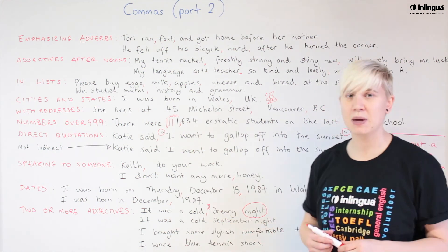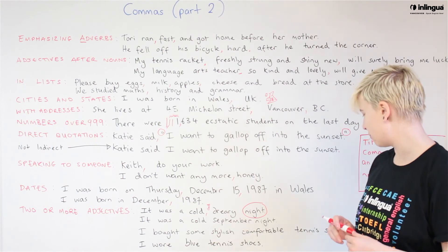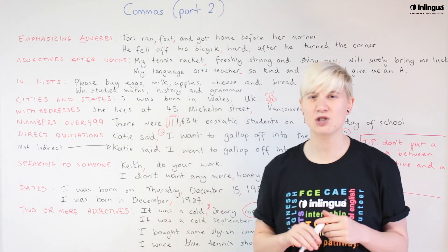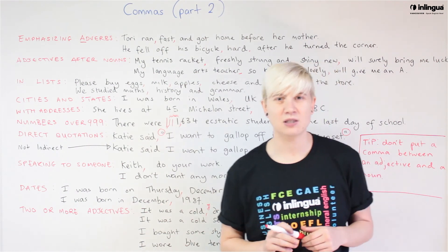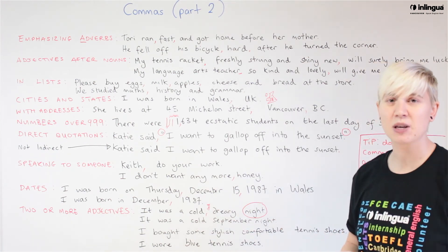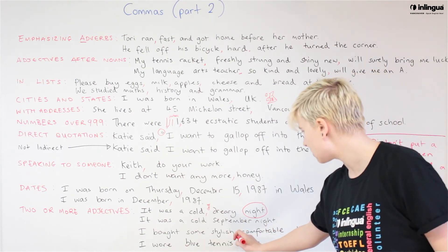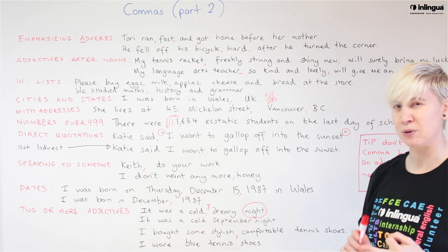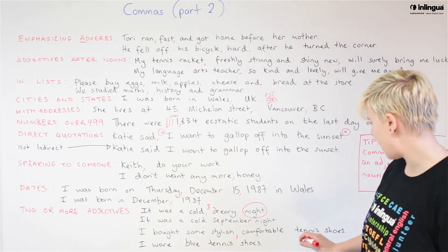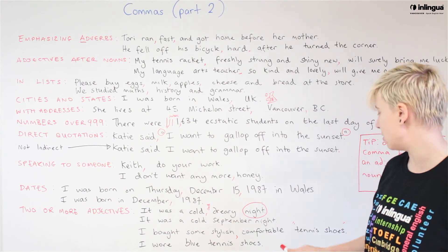This is a tricky one — make sure you watch out for those compound nouns. Next sentence: 'I bought some stylish, comfortable tennis shoes.' We have three words acting as adjectives: stylish, comfortable, tennis. Where do the commas go? Let's practice with 'and': 'I bought some stylish and comfortable tennis shoes' — yes, that makes perfect sense, so we put a comma between stylish and comfortable. But 'I bought some comfortable and tennis shoes' doesn't make sense, so we don't separate comfortable and tennis with a comma.